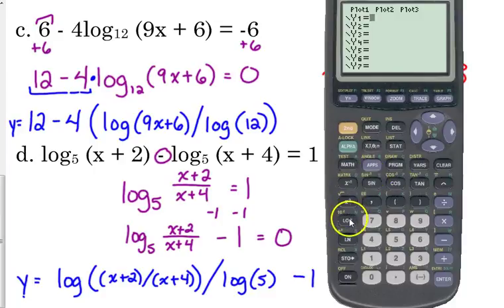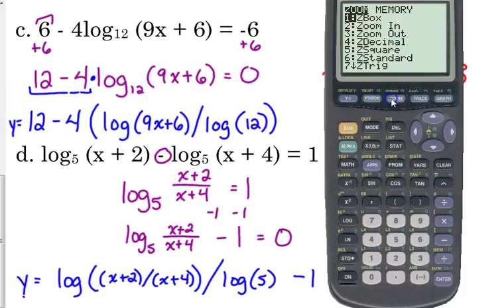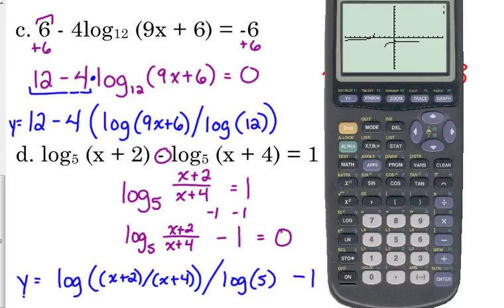So, clear everything out, log. You've got to add a second set of parentheses, x plus 2, divided by x plus 4, make sure you put that in parentheses, close both sets of parentheses, divide it by the log of 5, close your parentheses, minus 1. I'm going to reset this, zoom standard, because I don't know where it's going to cross. So it crosses here, over here in the negatives, and I don't think it's going to cross again over here.